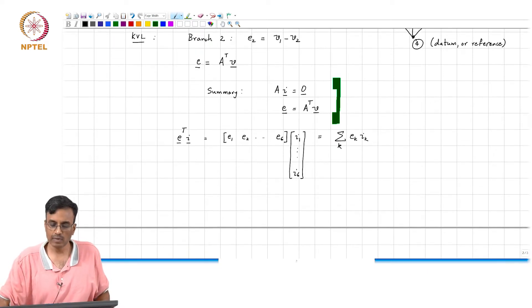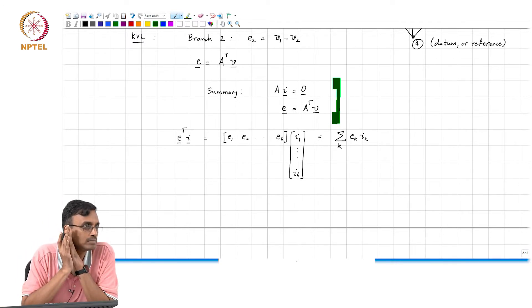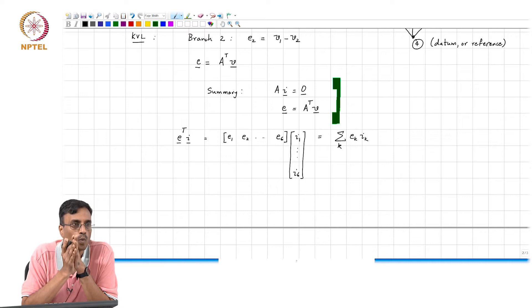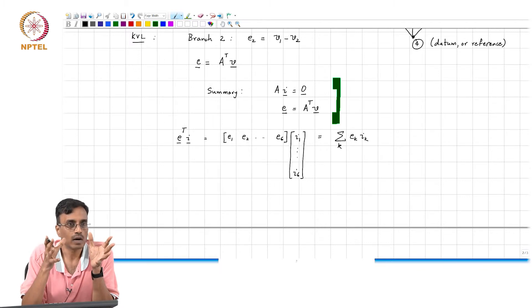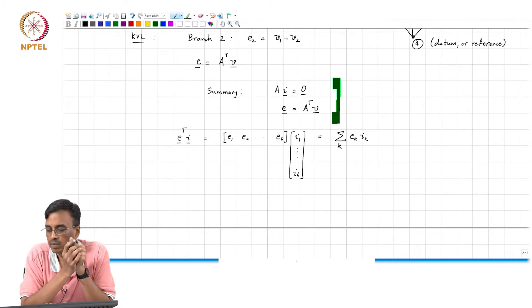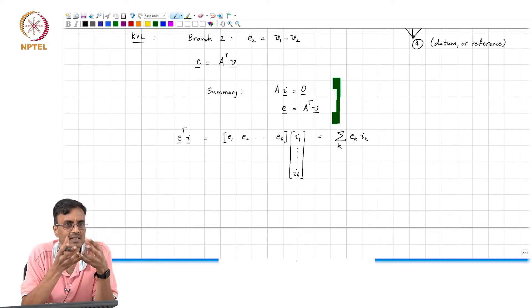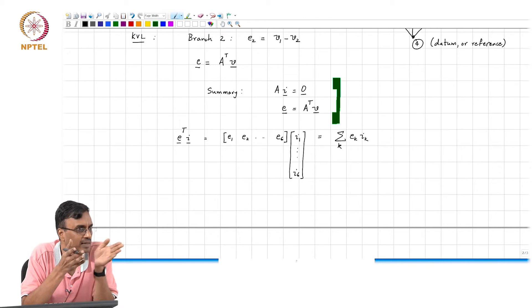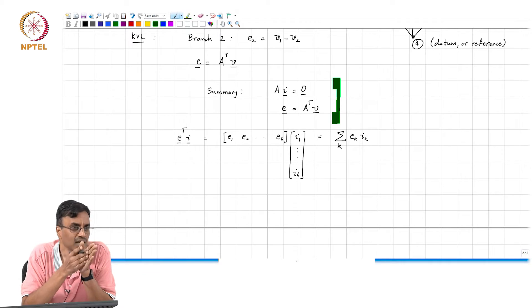And intuitively, what do you expect that to be? If you take all the branches in a network and compute sigma Ek Ik, each Ek Ik is simply the instantaneous power that is being dissipated in the kth branch. And the summation is basically adding up all the powers in all the branches at any instant in time.